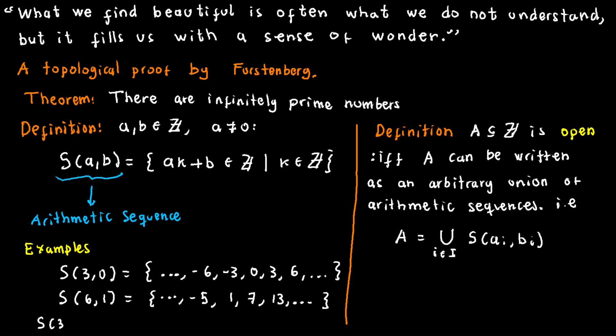Furstenberg characterizes an open set as a collection of integers that can be expressed as an arbitrary union of arithmetic sequences. Consider, for instance, the set of elements that are either multiples of 3 or congruent to 1 modulo 6. This set is deemed open since we can represent it as the union of S(3,0) and S(6,1).